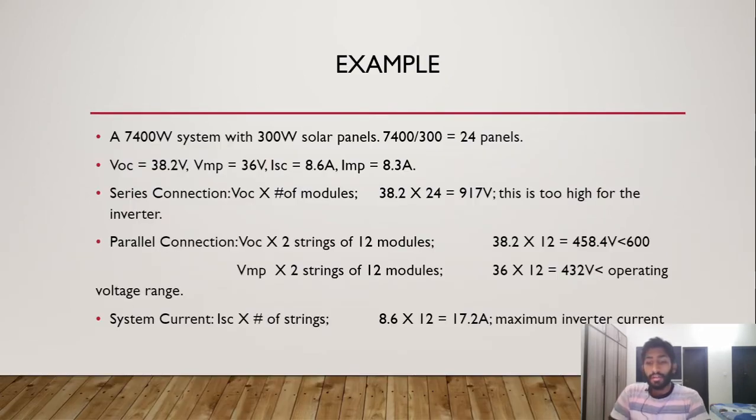Let's look at an example of how you would size an inverter. Let's say we have a 7.4 kilowatt solar system with 300 watt solar panels. How many modules do we need? We divide 7400 watts by 300 watts to give us 24 panels. If we have a series connection, multiplying the Voc of 38.2 volts times 24 modules gives us 917 volts.